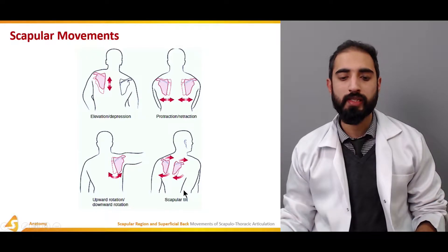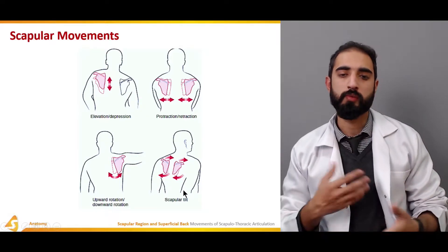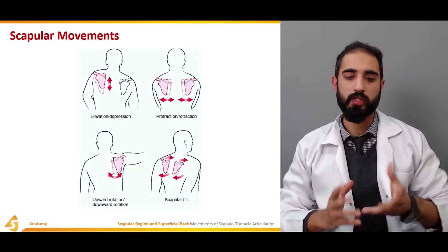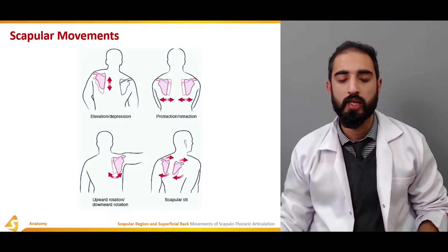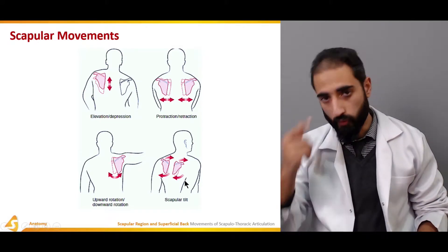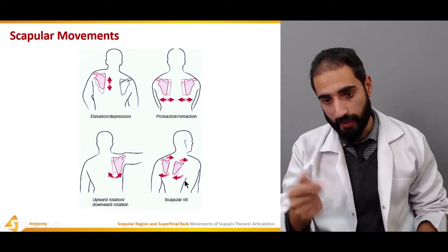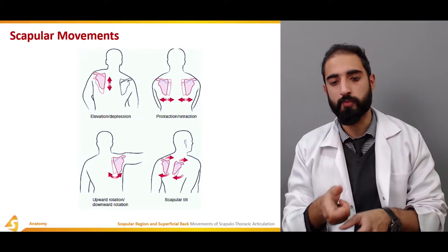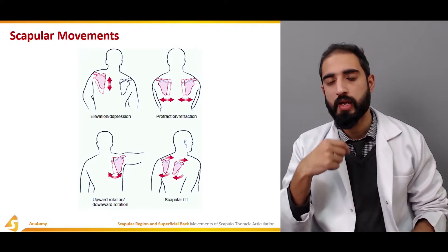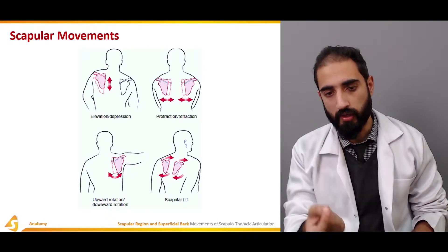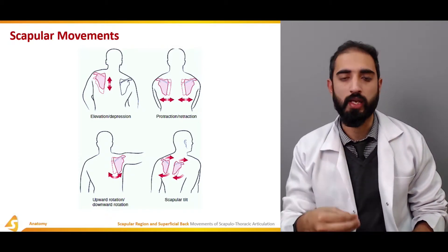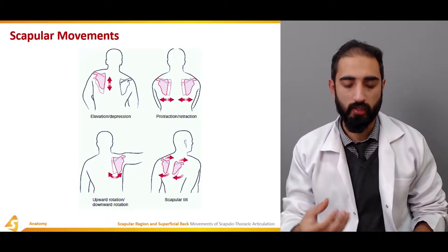Scapular tilting is also known as anterior and posterior tipping. In anterior tipping, the superior angle moves anteriorly and the inferior angle moves posteriorly. In posterior tipping, the superior angle moves posteriorly and the inferior angle moves anteriorly.